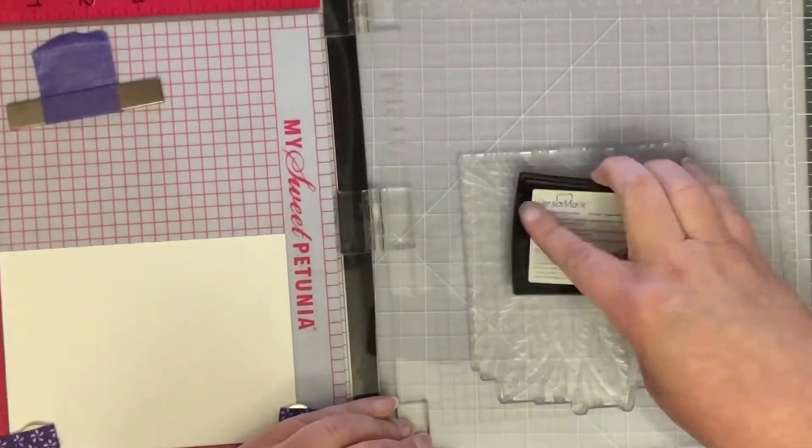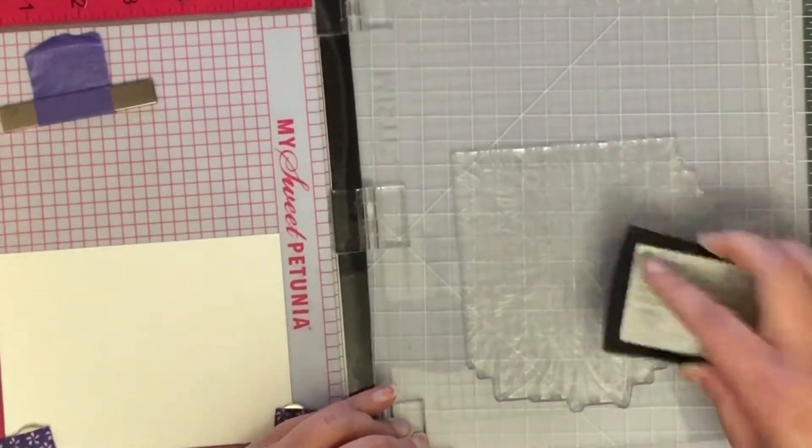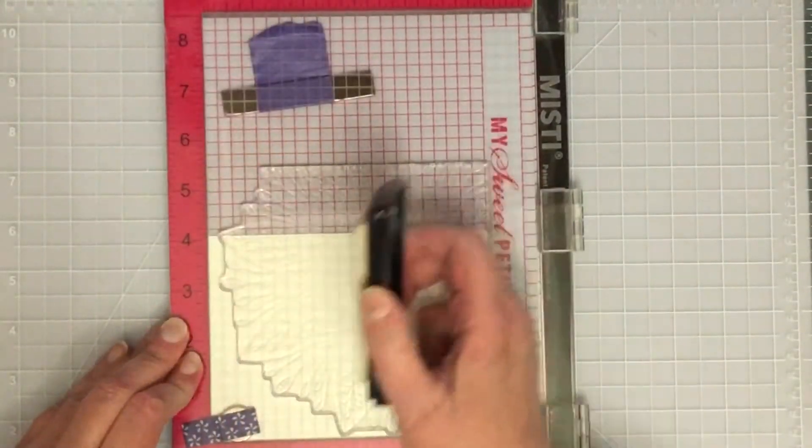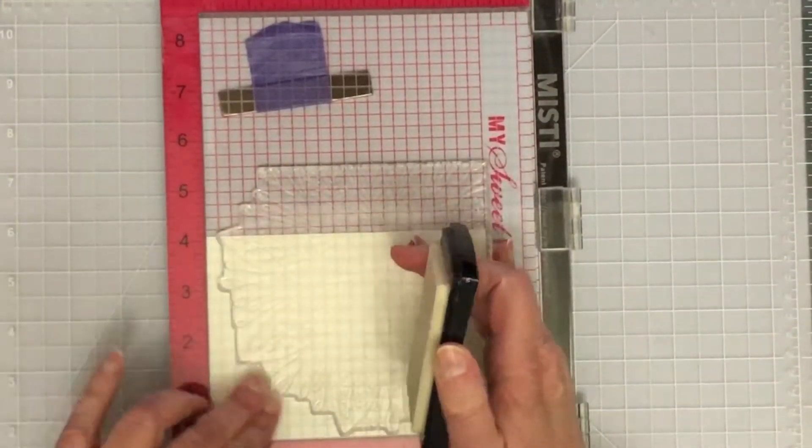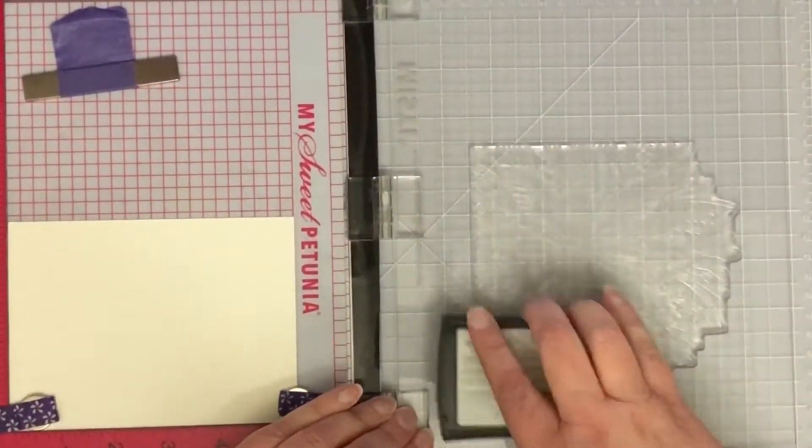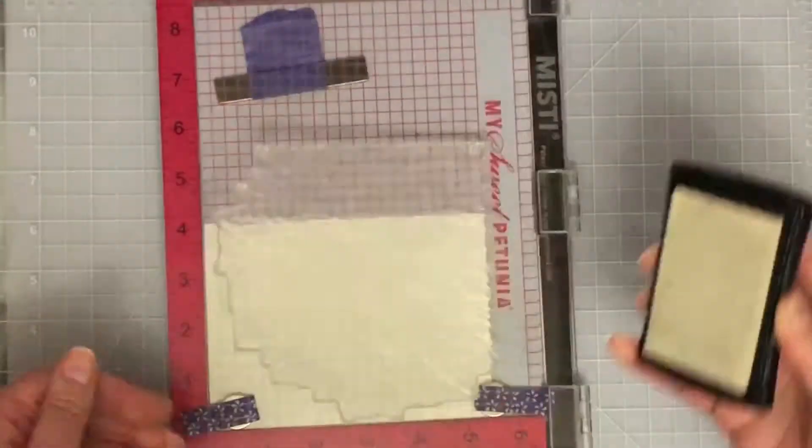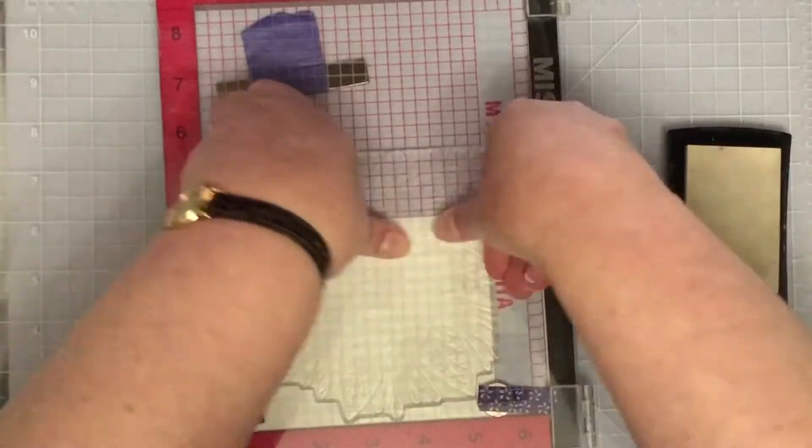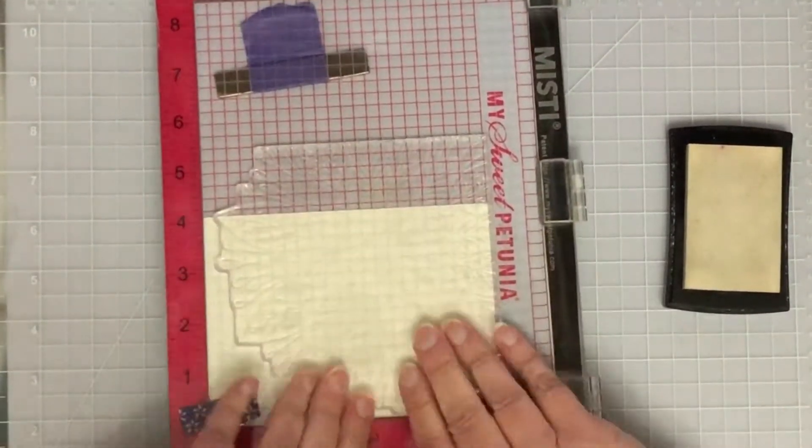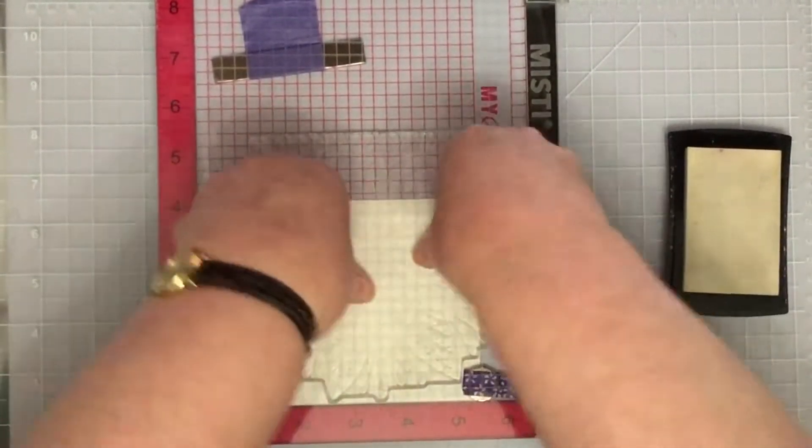This particular watercolor paper is slightly textured, so it's important to use a stamp positioning tool like the MISTI, because I'll have to stamp it multiple times. You're just not going to get really good coverage the first time because of all that texture. I'm being really careful to press down on every single area.